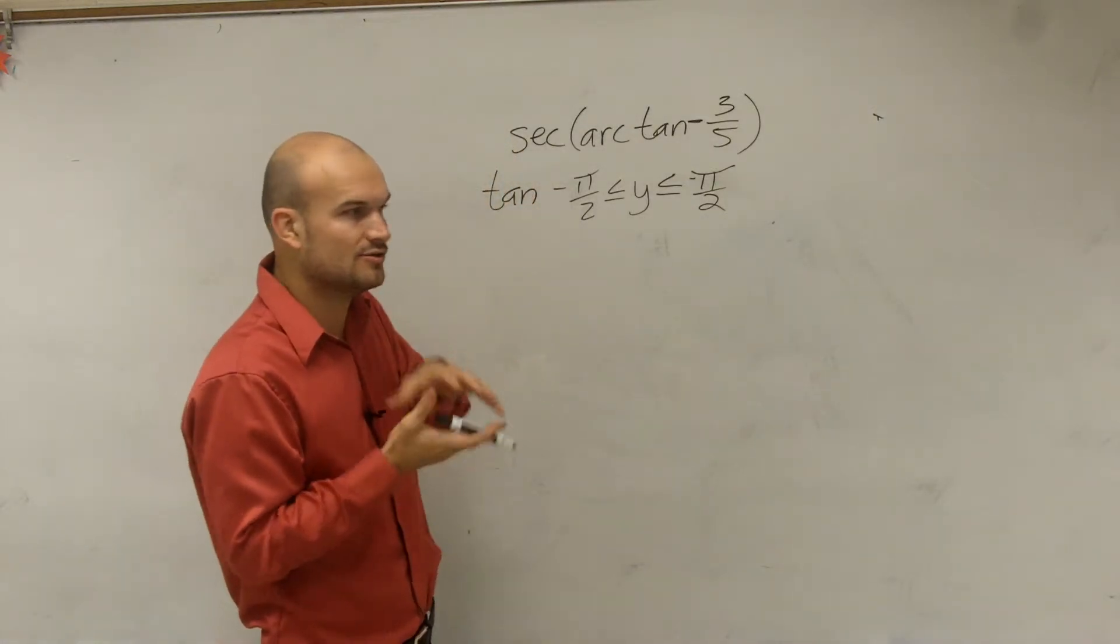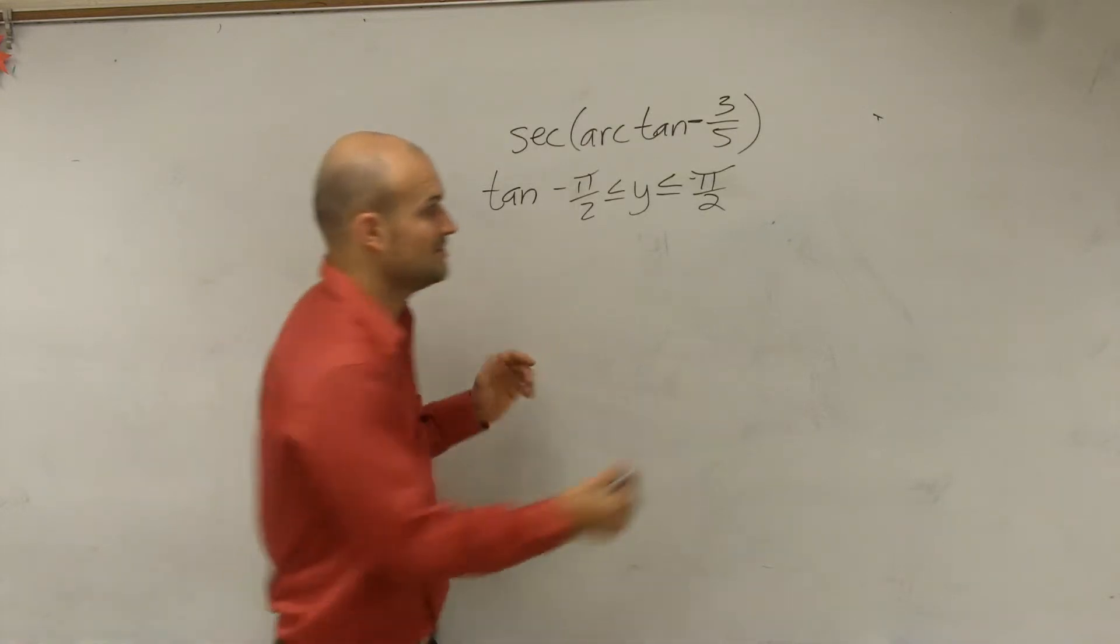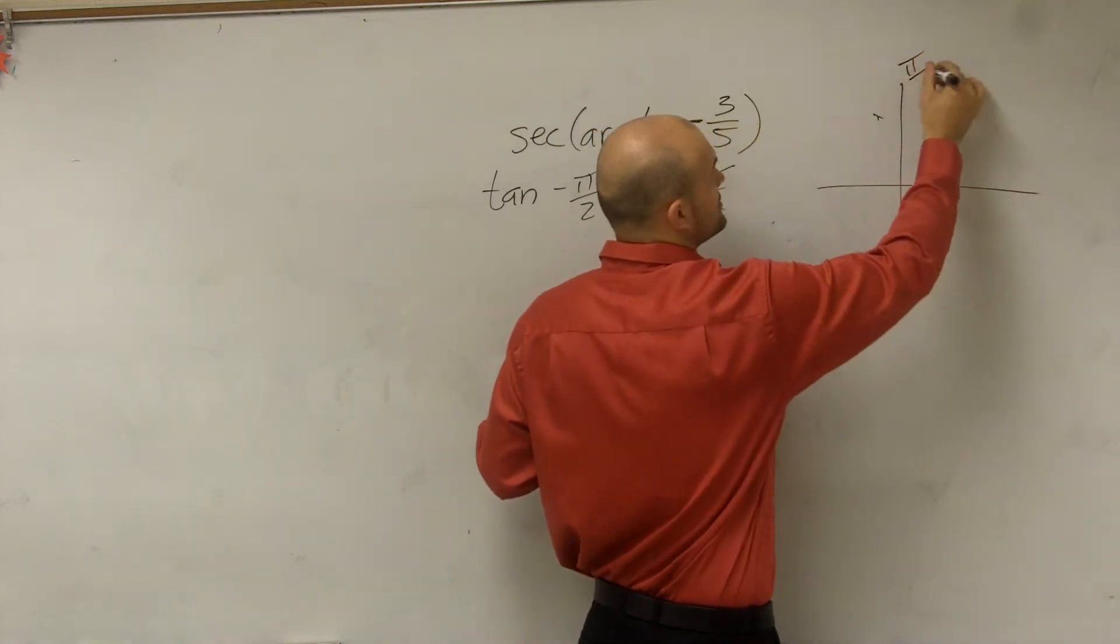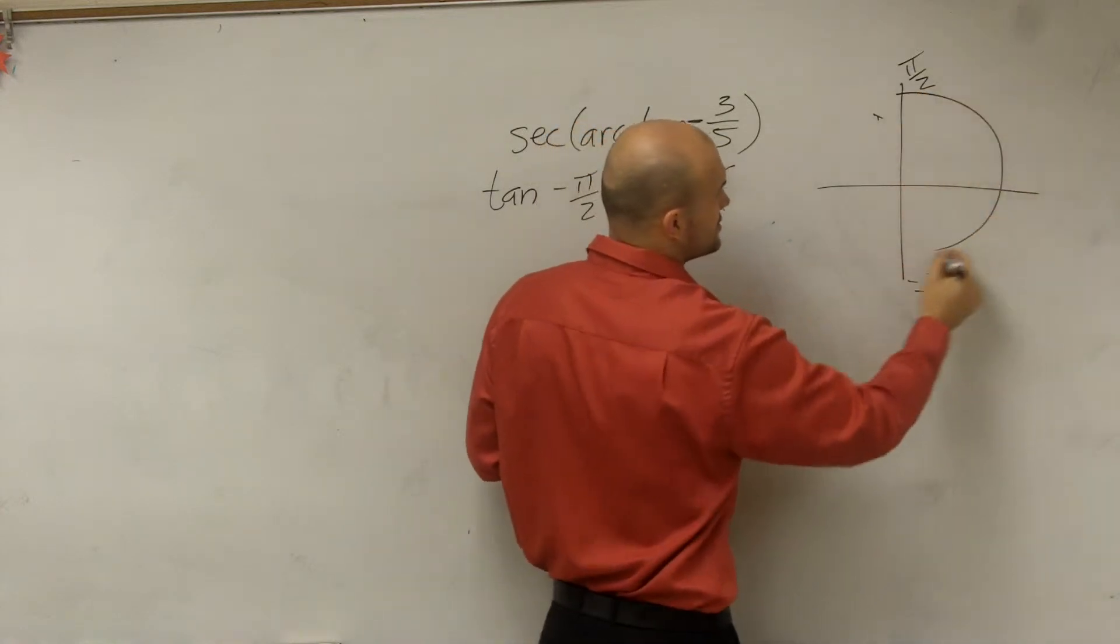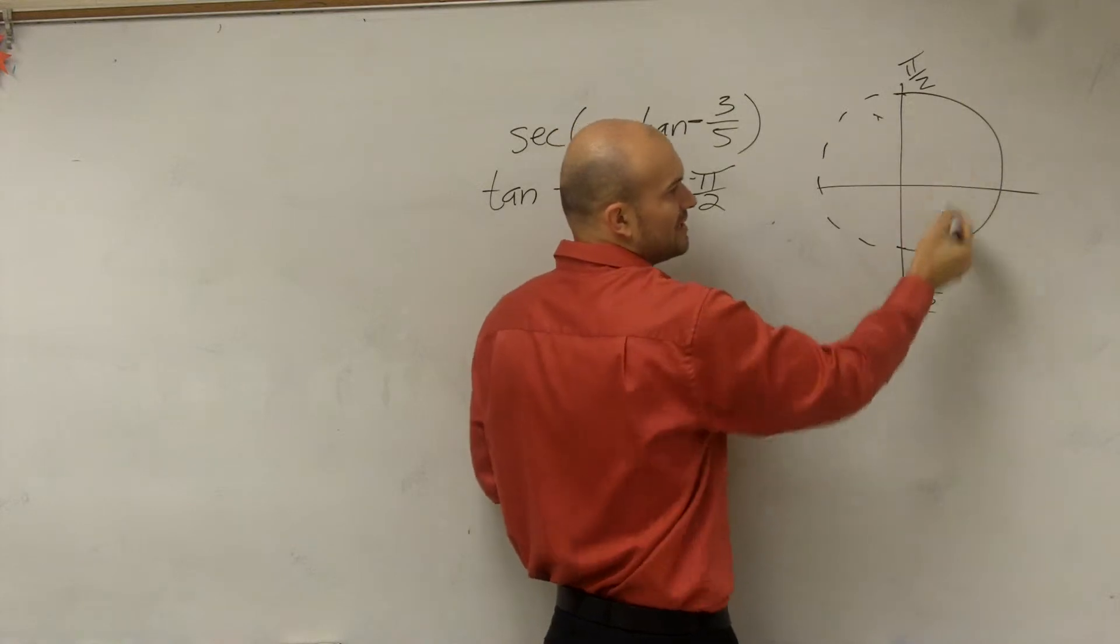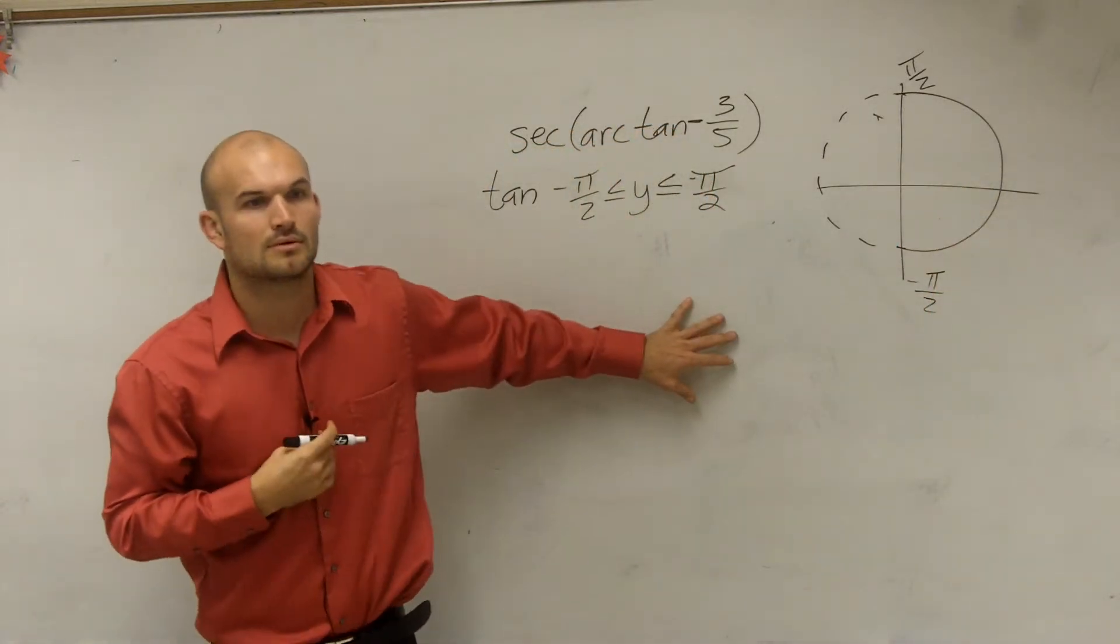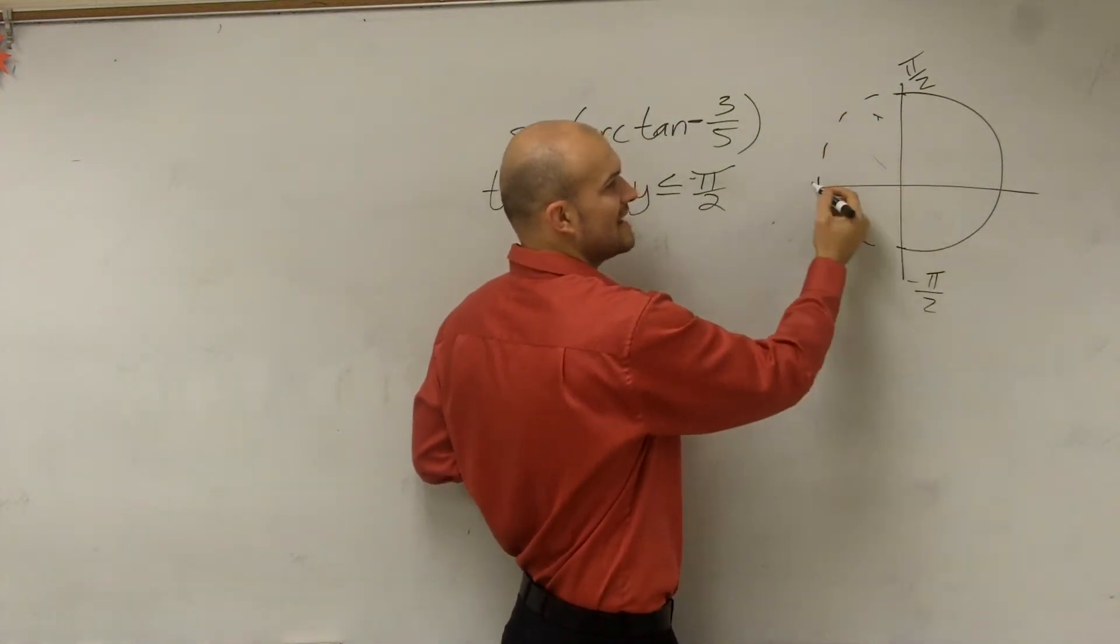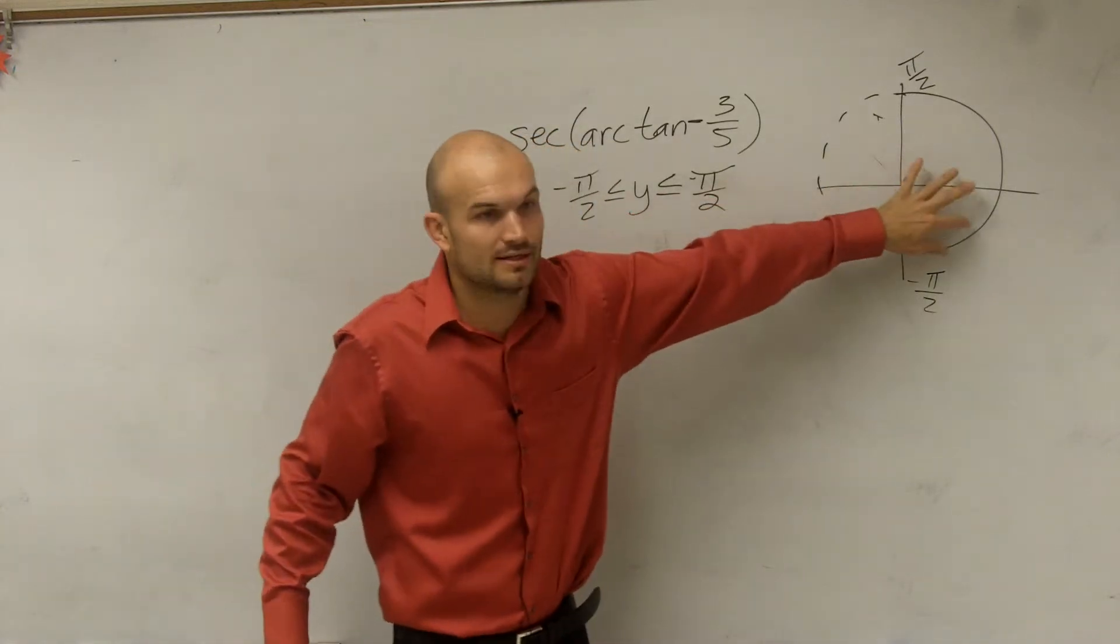If the tangent can only be, you can only find the inverse between negative pi halves and pi halves. Only between these first two quadrants. Where's pi halves? Here's pi over 2, right? So that's negative pi over 2. So if we were to draw a unit circle, your triangle can only be between these two if you're going to try to find the inverse for tangent. Because the top triangle was over here in the second quadrant, right? It was negative 3 up 5. That's in the second quadrant, which is not in these two quadrants.